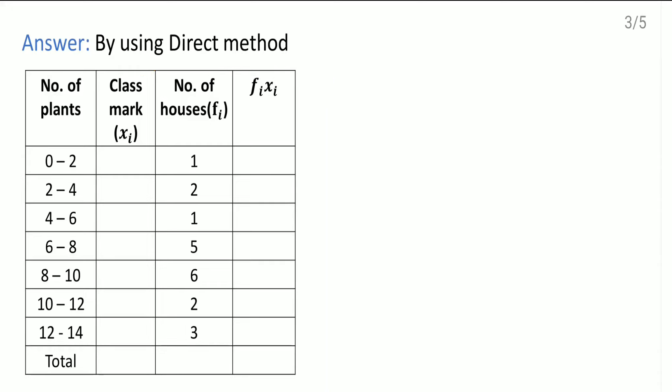Class mark for the first class interval 0 to 2. Class mark means what? Upper limit plus lower limit divided by 2. This is the upper limit, this is the lower limit. That means 0 plus 2 divided by 2. Answer will come as 1. It is just the average of the class. Here 2 to 4, the average is 3. Then here, this is 5. This one is 7. This is 9. Then here 11. This is 13.